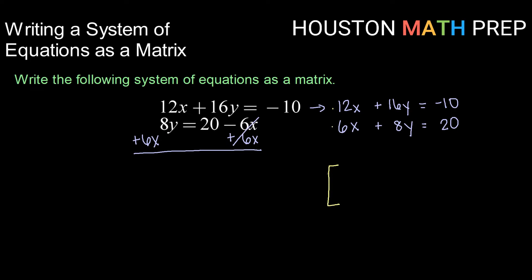We have two equations so we need two rows, and thinking column-wise we need three columns. Bringing down the information from equation 1: coefficient of x is 12, coefficient of y is 16, and the constant is negative 10. For equation 2: coefficient of x is 6, coefficient of y is 8, and the constant is 20. So this 2 by 3 matrix represents this original system of equations.